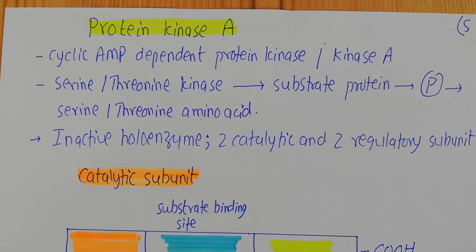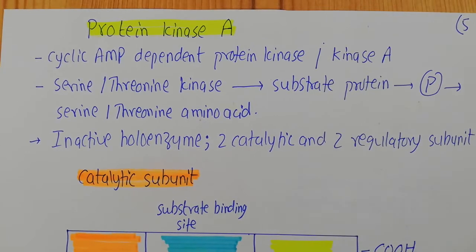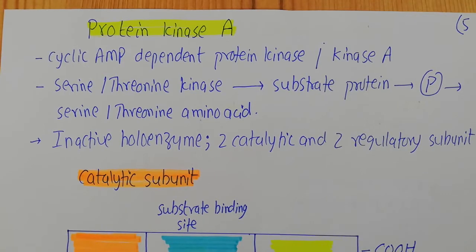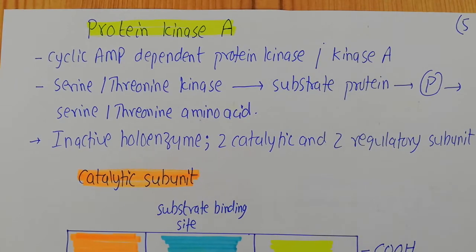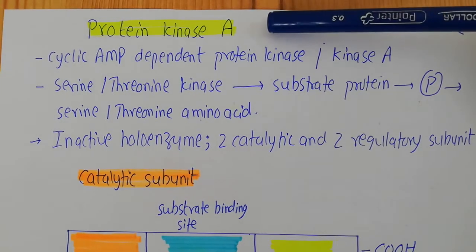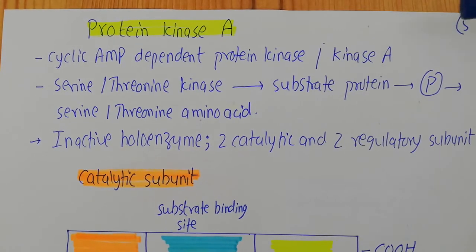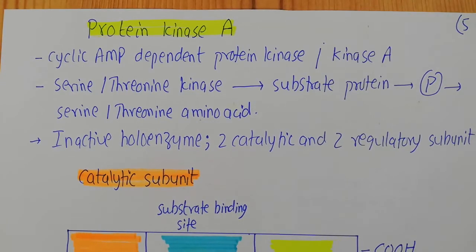The alpha part of the G protein, now attached to GTP, goes and activates another enzyme called adenylyl cyclase, which converts ATP into cyclic AMP. Now, cyclic AMP goes on to activate protein kinase A. In this video, we are going to focus on the structure of protein kinase A in detail and the different subunits present in it.